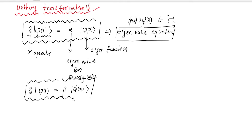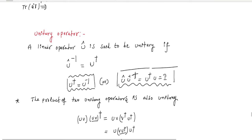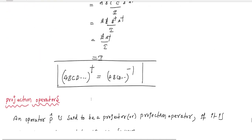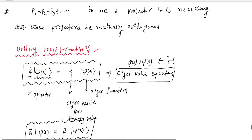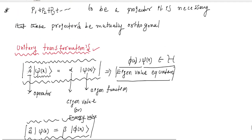Let us take the unitary operator, which we already discussed in the unit operator and projection operator sections. A linear operator A is said to be unitary if its inverse is equal to its adjoint. So I am taking some unitary operator. This is the introduction of unitary transformation.